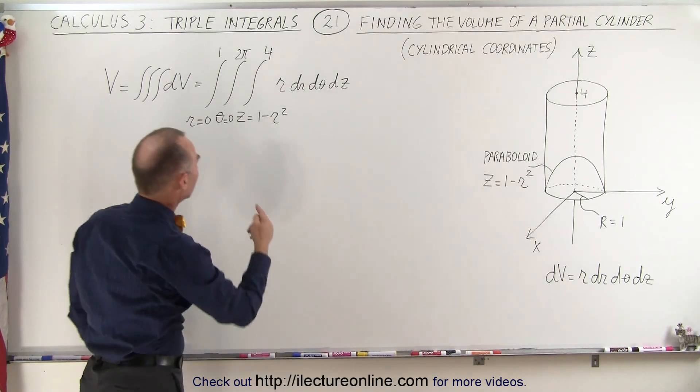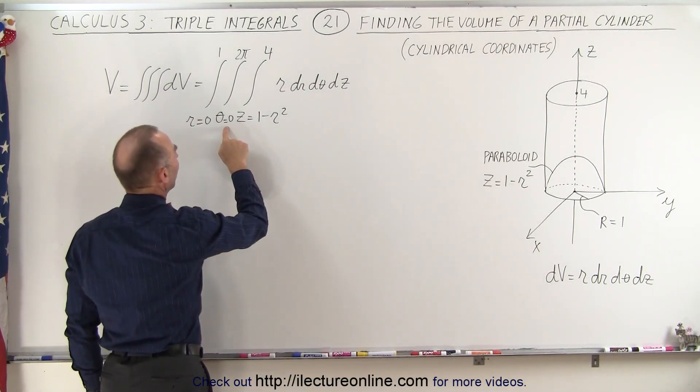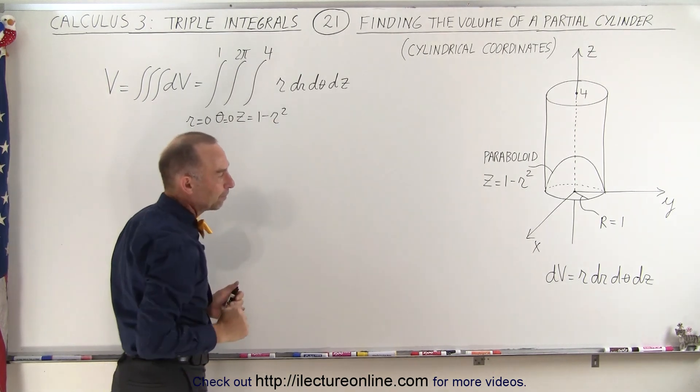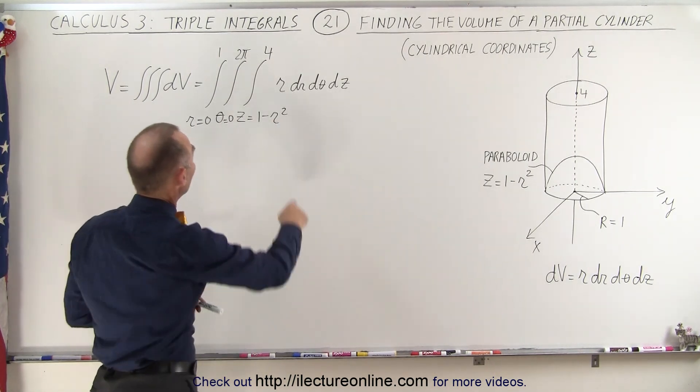In the angle direction, we're going to integrate all the way around the circle from 0 to 2π. And for the radius, we're going to integrate from 0 to 1.